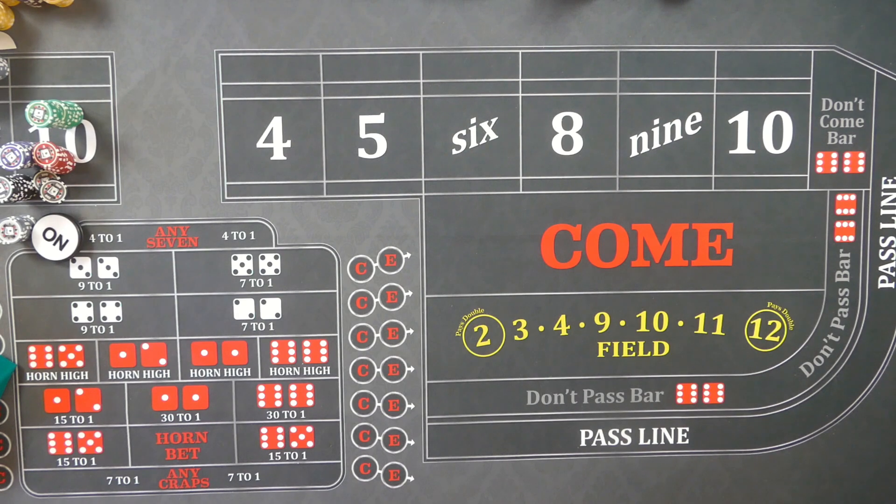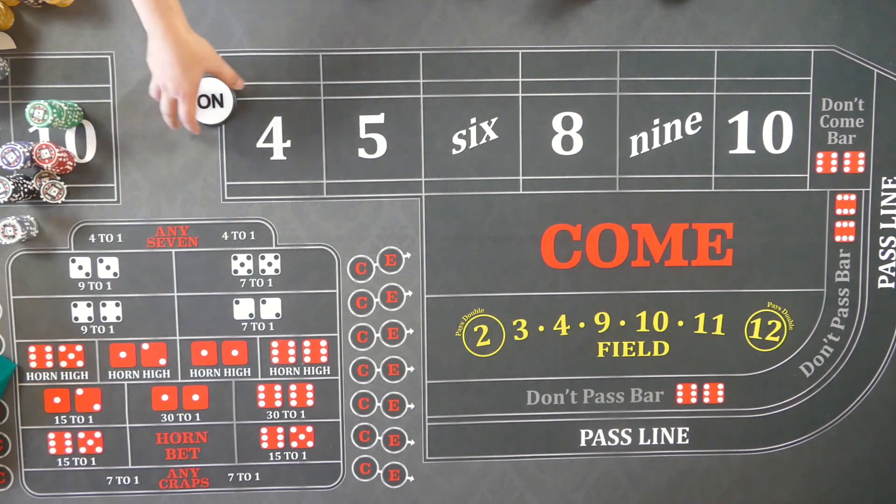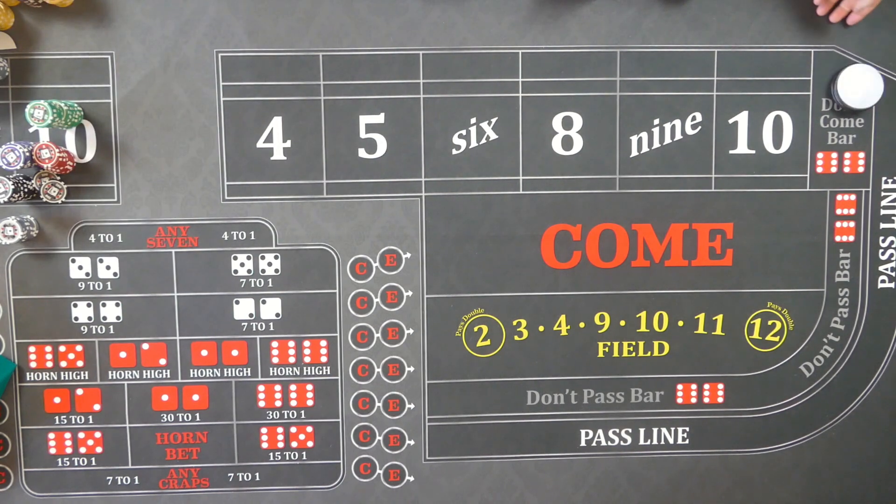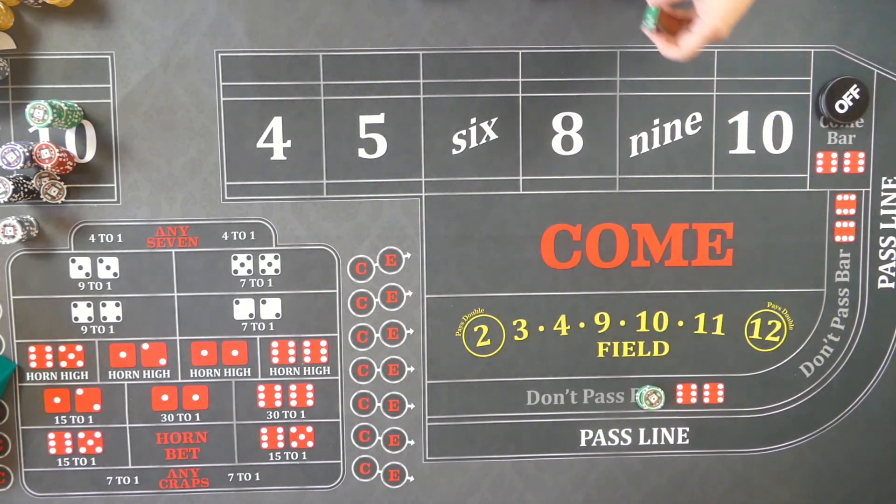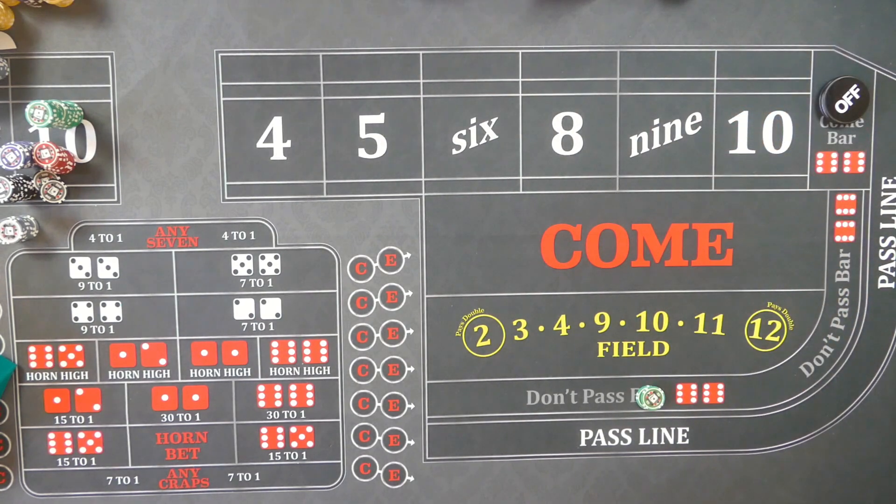This strategy, I've seen three different players over the last week play this. I don't know where it came from, but it's a very odd strategy. The player would start with a $50 don't pass bet.